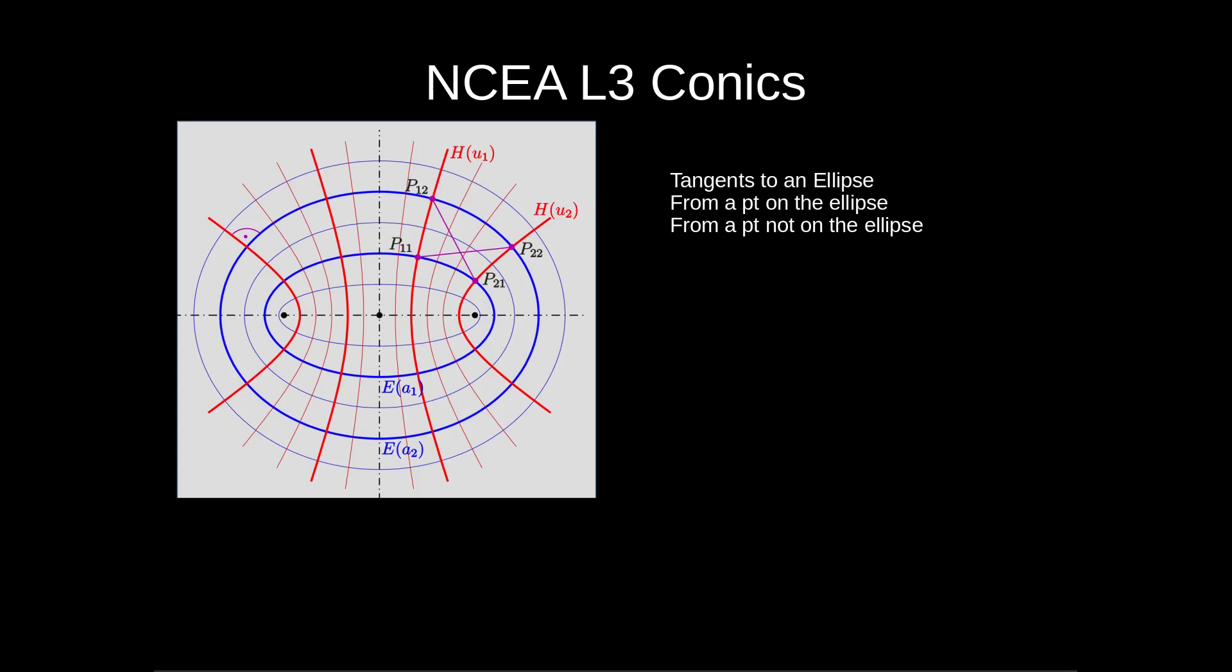In this video we're going to look at how to find the tangent to an ellipse. We're going to look at situations where we want to find the tangent to ellipse when we know a point on the ellipse, and we also want to look at finding the tangent to a point that's not on the ellipse. But we are going to stick to points which are actually on either the major or the minor axes.